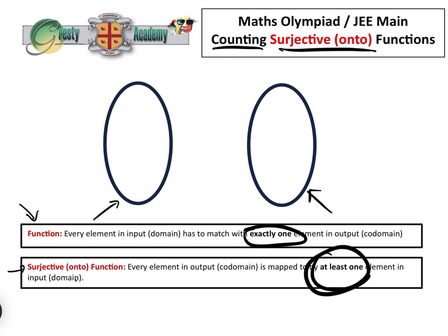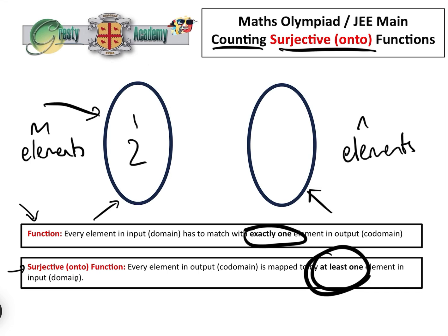For example, let's say there are m elements in the domain and n elements in the codomain. If m is less than n — say there are only two elements in the domain — it is impossible for the function to be surjective, because there are fewer elements in the domain than in the codomain. So it is not possible for those two to map to at least one of those three.